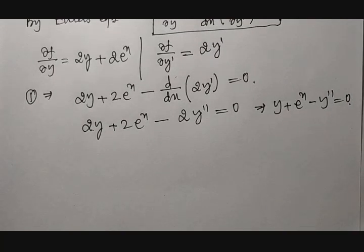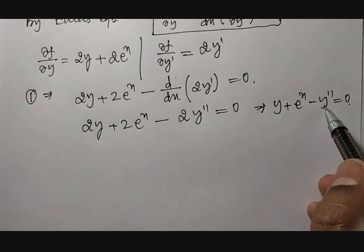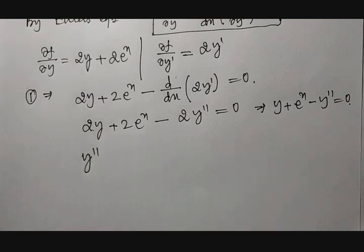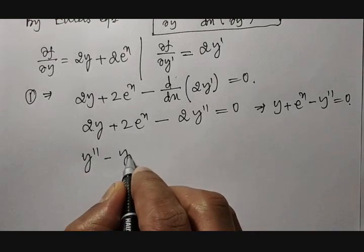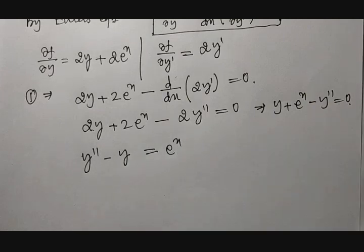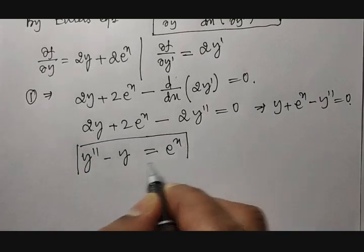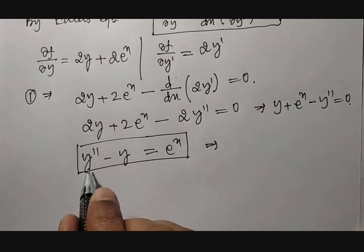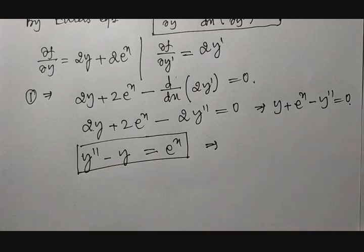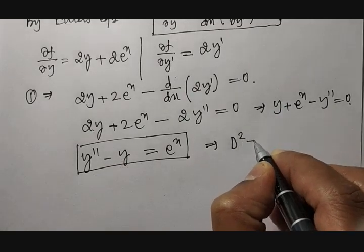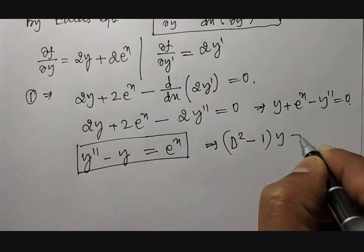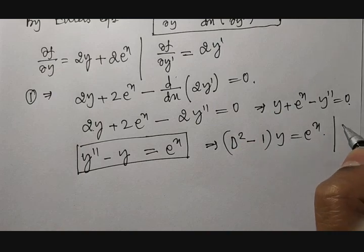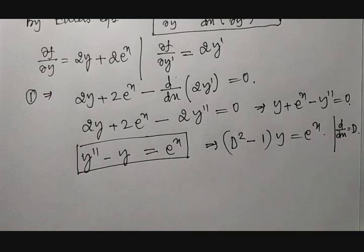Rearranging with the higher-order term first and keeping it positive, we send y-double-dash to one side and y to the other: y-double-dash minus y equals e raised to x. Applying integration twice directly is difficult, so we treat this in auxiliary equation format: (D squared minus 1)y equals e raised to x, where d/dx is treated as capital D. This is a second-order differential equation, whose solution method was discussed in the previous second semester.